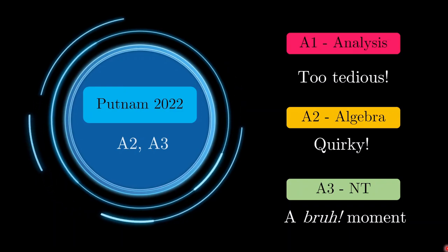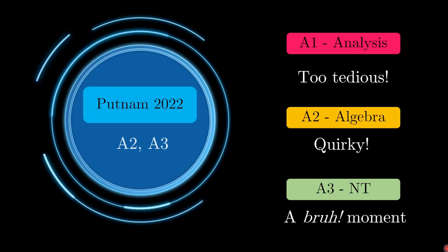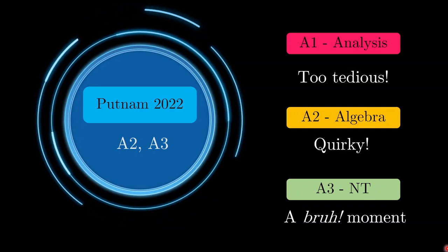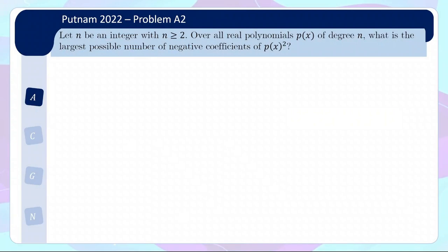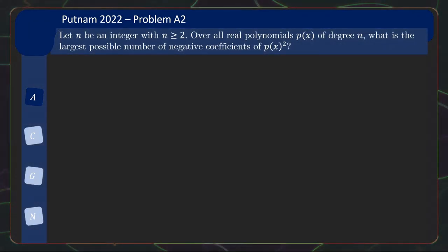Instead, we'll be covering A2 which is an algebra problem that is a little quirky, as well as A3 which is a number theory problem. So for A2, since it's a quirky little problem, I decided to switch up my default template a little, change it to the dark mode. Let me know if you like this design better.